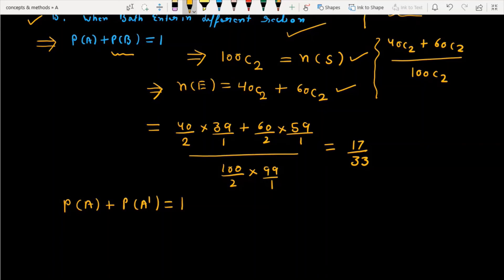The total chances are 100%. So P(A), when this event is happening, when these two are in one section, and when this event is not happening, P(A'), which is the complement of A, this must be equal to 1. And I'm interested in P(A'), which is P(B).